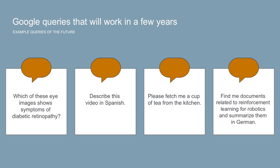Seeing and understanding the world will enable your favorite search engine to answer queries that it really can't answer today. Jeff Dean from the Google Brain Project shared four examples of technologies they're working on — queries that will be answerable in the near future that just aren't answerable today. My personal favorite: I can't wait for a robot to go into the kitchen, make me a cup of tea, and bring it to me.